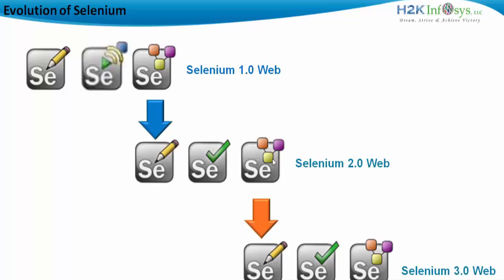There were many releases of the Selenium 2.0 version over time. The last version of the 2.x series was 2.53.1, launched around April or May. Then in August 2016, the Selenium team launched the 3.x series — Selenium 3.0 — retaining IDE for record and playback, Selenium WebDriver API, and Selenium Grid.